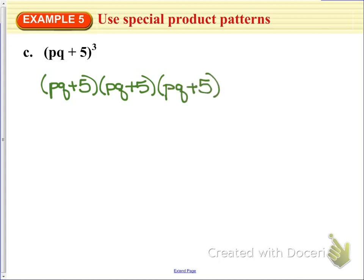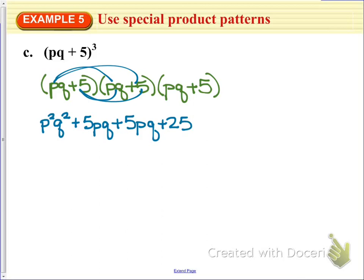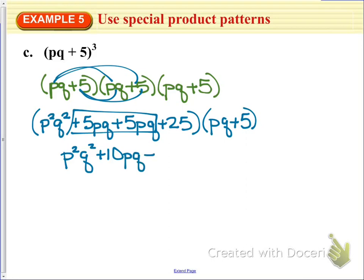And what we're going to do is you can start by just multiplying out one pair of these binomials. And so I'm just going to start with the first two. It doesn't matter which two you multiply first, especially in this case because they're all the same binomial. So pq times pq is p squared q squared. pq times 5 would be 5pq plus 5pq plus 25. And then that whole expression will be multiplied by pq plus 5. But first I'm going to simplify because I've got these two 5pqs in the middle. So I'm going to do p squared q squared plus 10pq plus 25.